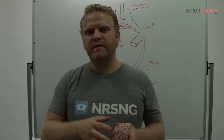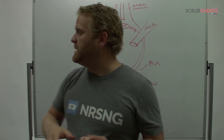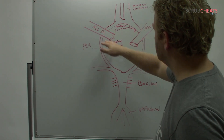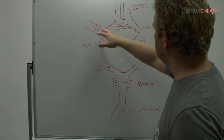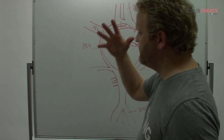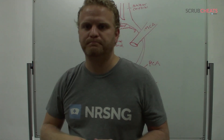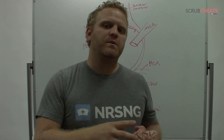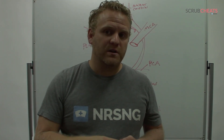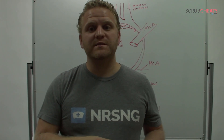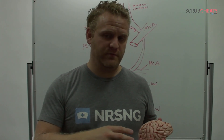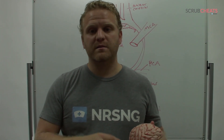The most important vessel to remember is the MCA. You can see right here the internal carotid connects with it — the MCA is a very big vessel. This is where most strokes occur, and this vessel feeds an enormous part of the brain, including parts of the frontal, temporal, and parietal lobes.